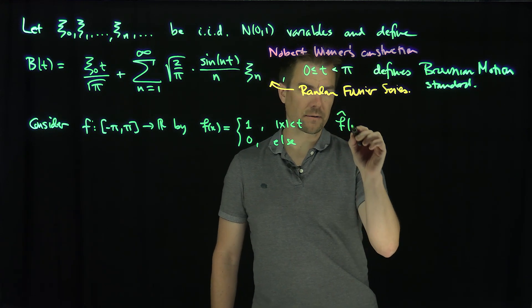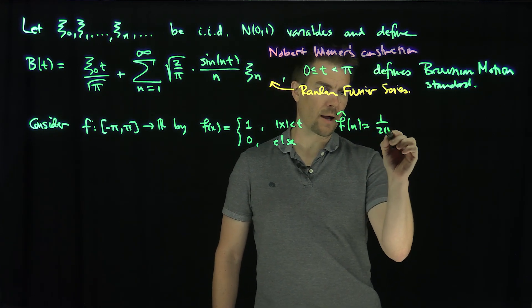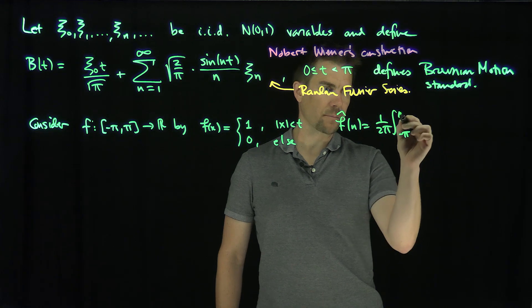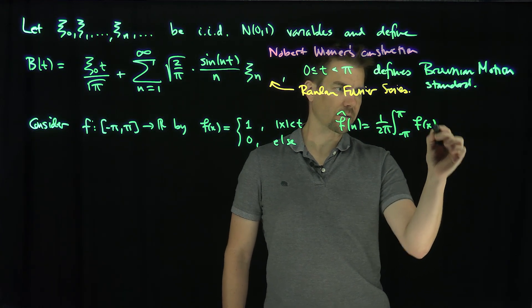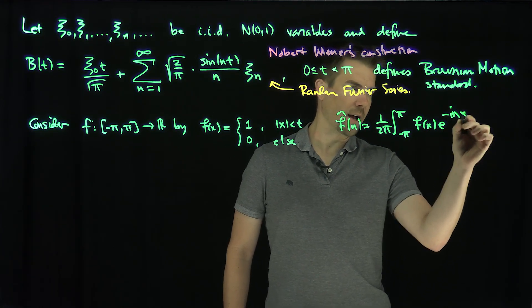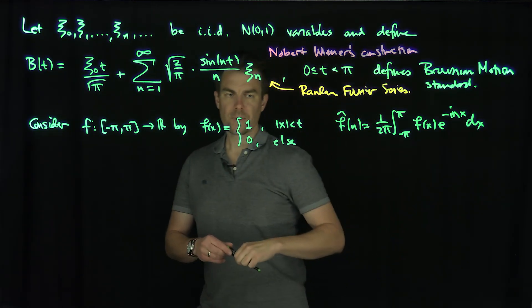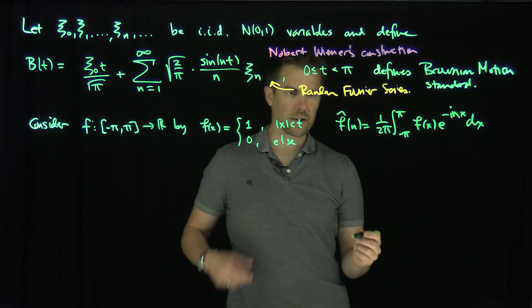And so recall that f̂(n) is 1 over 2π, the integral from -π to π of f(x), and then e^(-inx) dx.